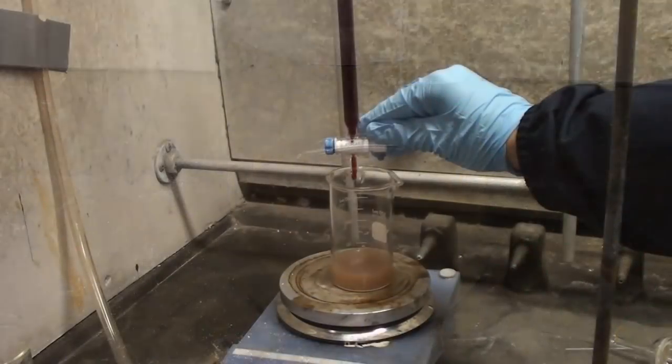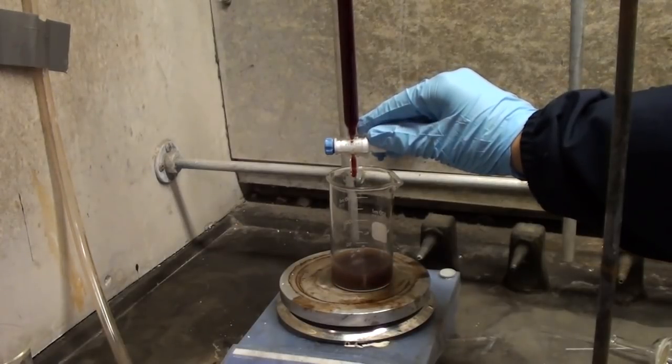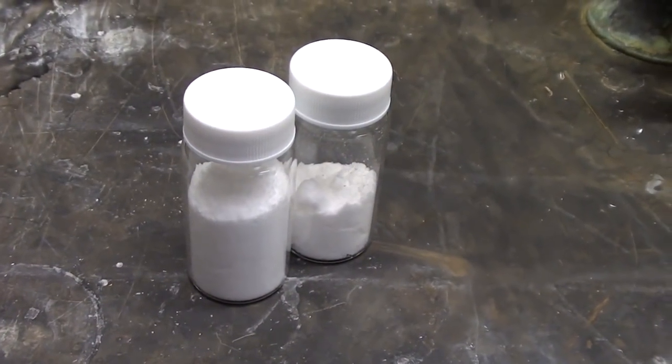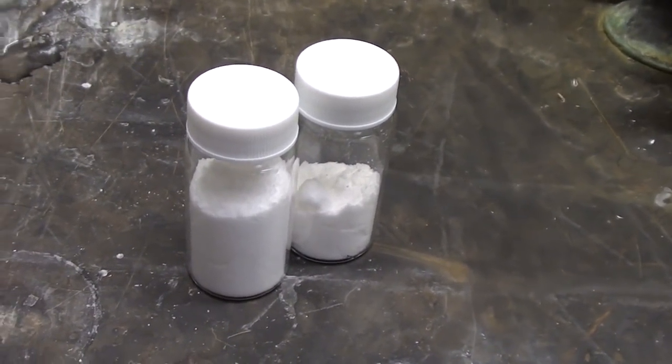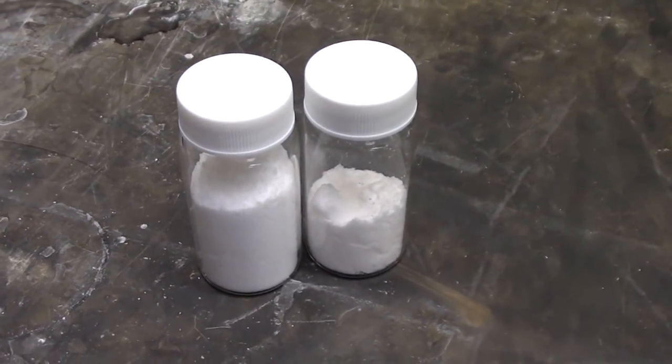You can also perform a redox titration with iodine for purity. I found my hydrazine sulfate to be better than 95% pure. And that's how you make hydrazine sulfate by the hypochlorite ketazine process. Thanks for watching. Please subscribe, like and comment.